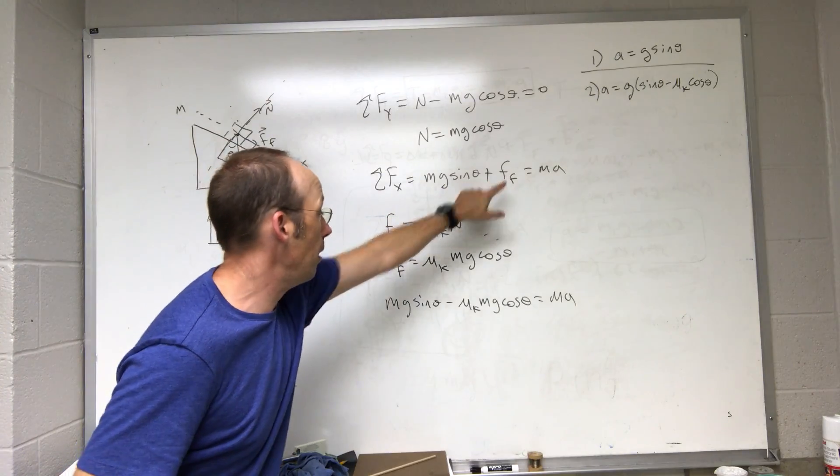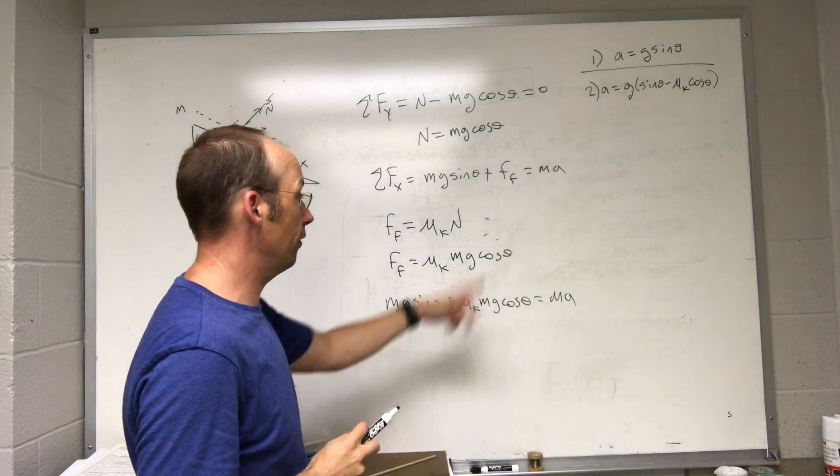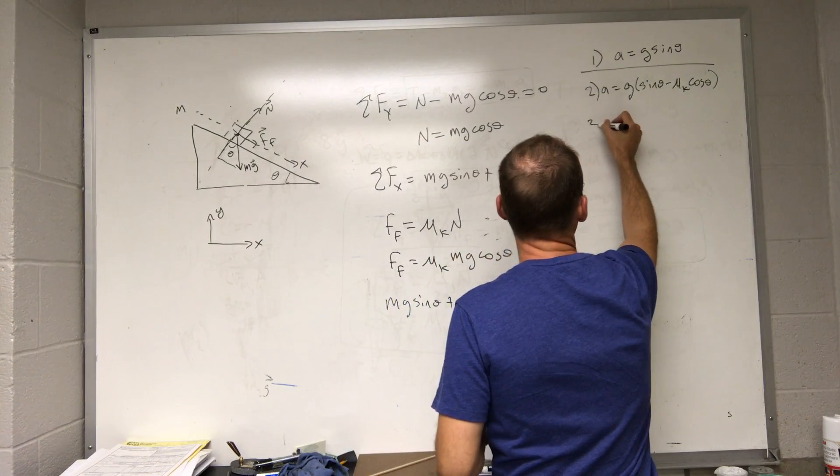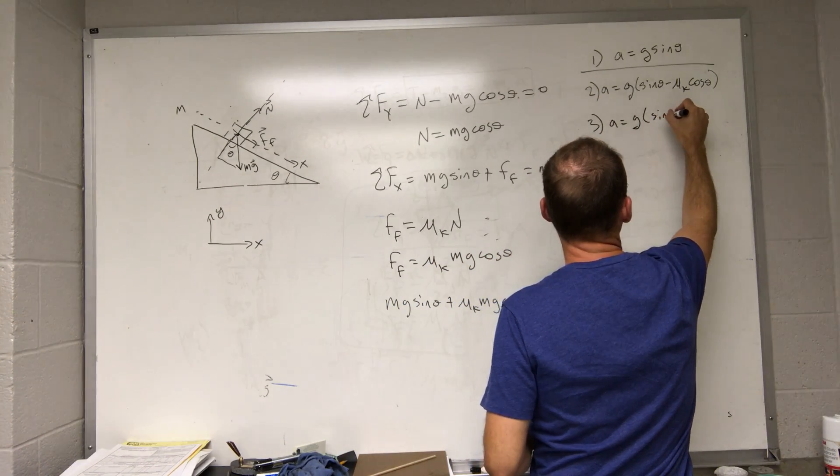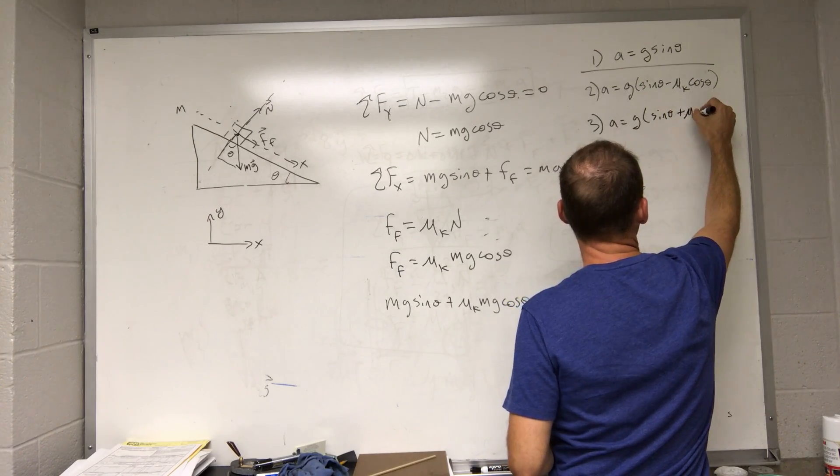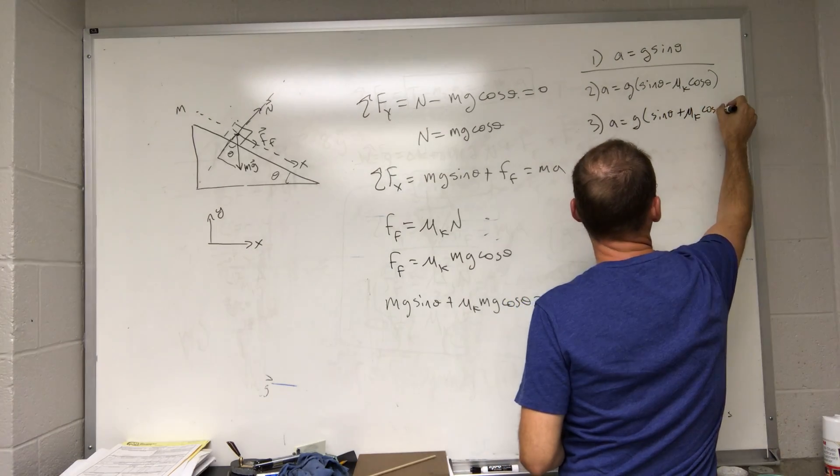Well, I changed that positive. This is positive, too. So now if I do the same solution, I get 3a equals g sine theta plus mu k cosine theta.